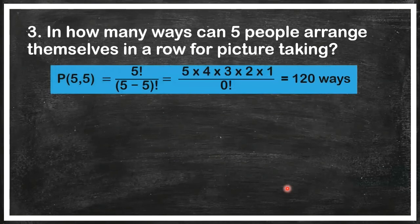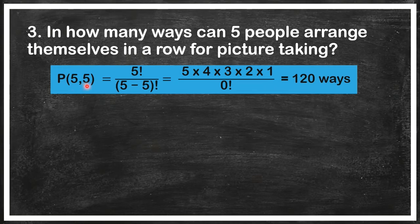Another example: arrange five people in a row. The order matters here, so we use the permutation formula where N = 5 and R = 5, because we take all five people and arrange them in a row.